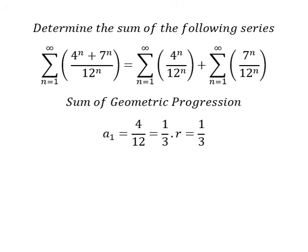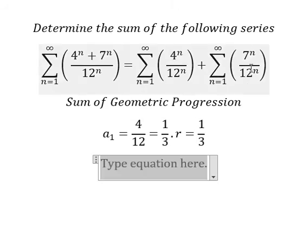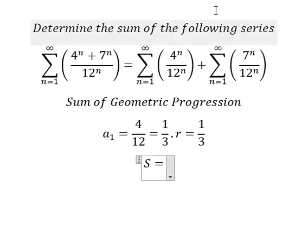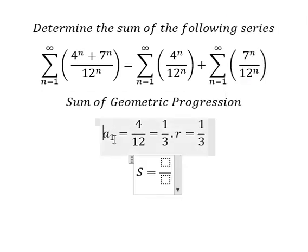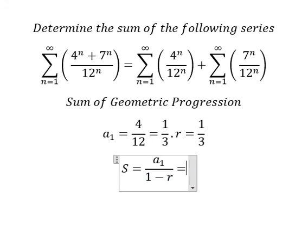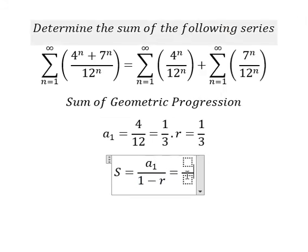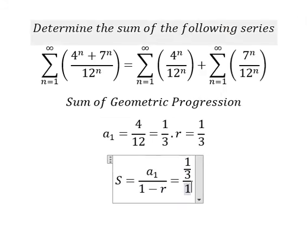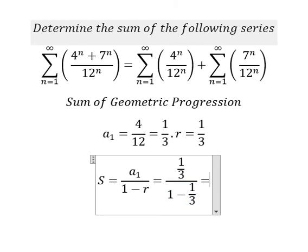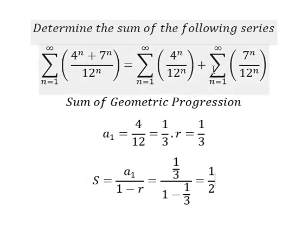Now for the first series, we have S equals a₁ over 1 minus r. When we put the values in, we get 1 over 2.